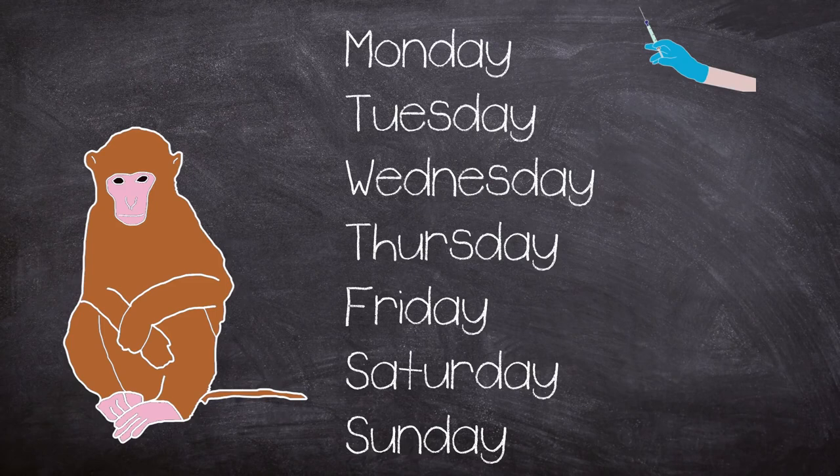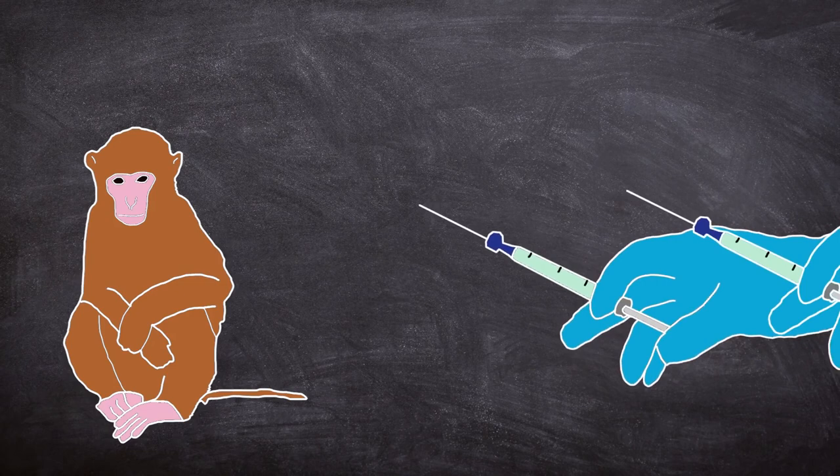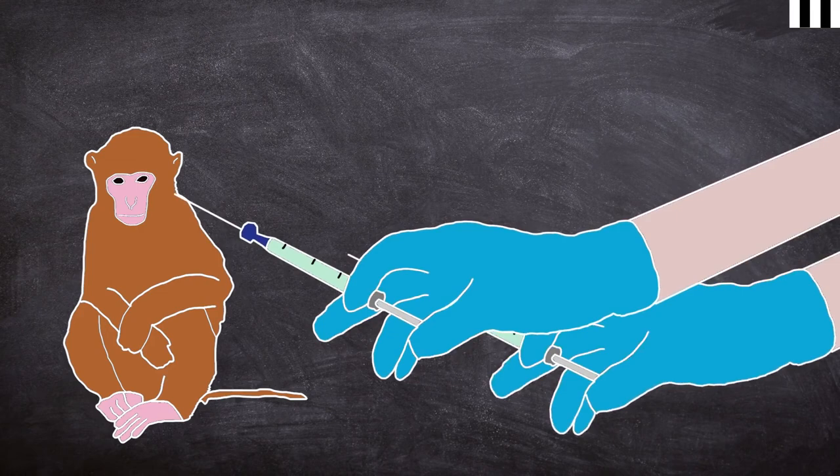Instead of a regimented single daily dose model, Seavers set out to mimic a more human form of dosage - for example, multiple doses in one day. He would also further modify his experiments to allow the animals to self-administer, and that leads us onto the infamous monkey drug trial.